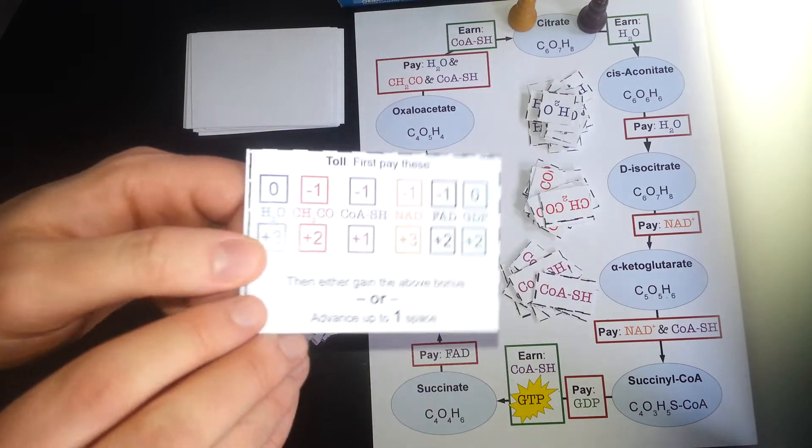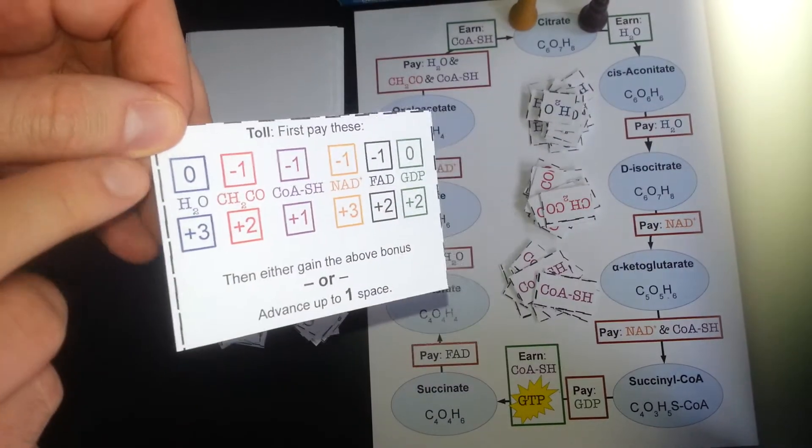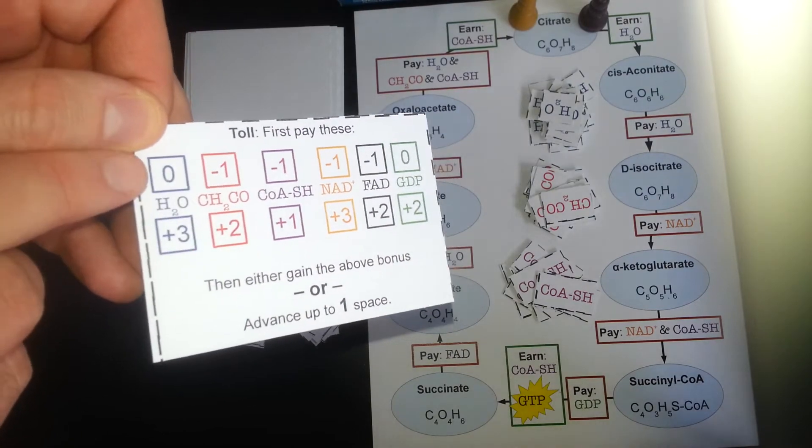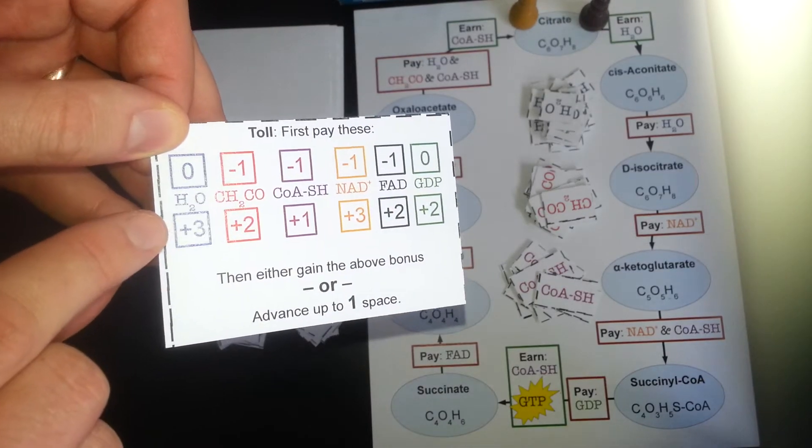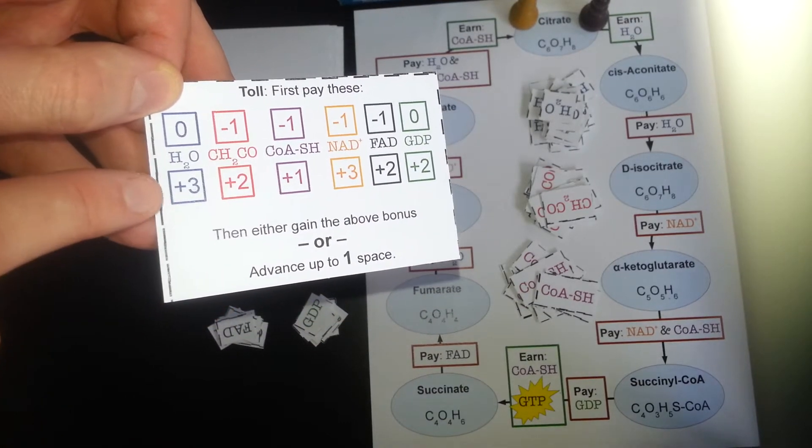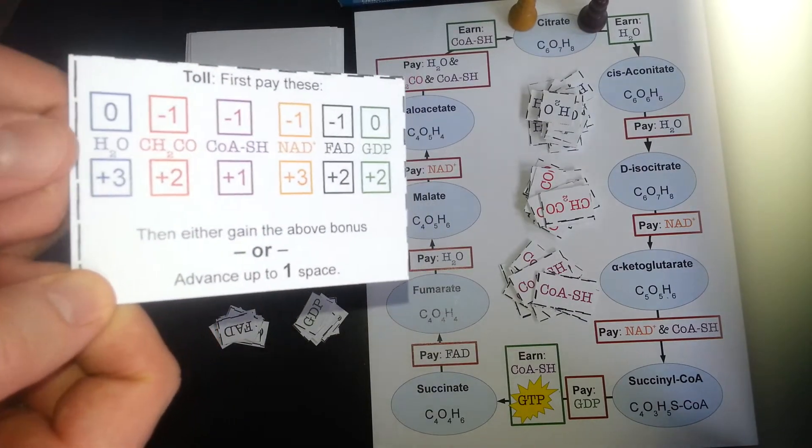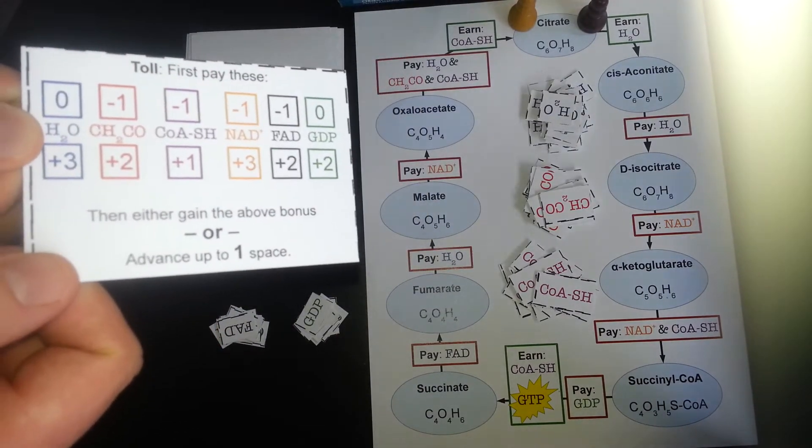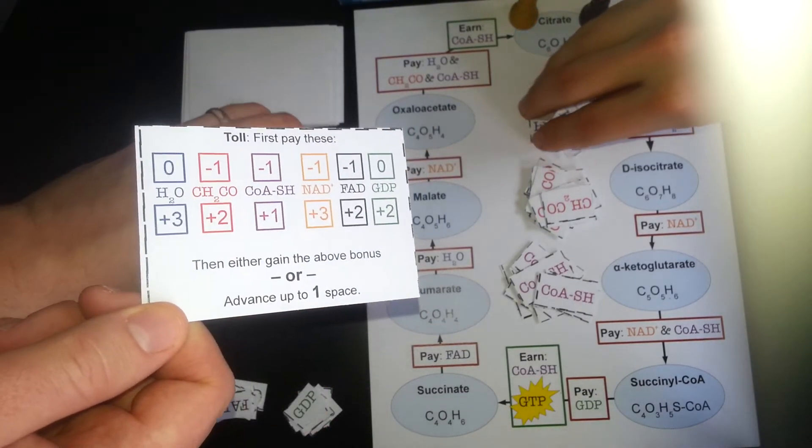Alright, so Ernie draws a card, and the first thing that he does is he pays this toll here, but we start out with no extra molecules, so he can't pay those, and we don't keep track of negatives, so that's fine. And the next thing he's going to do is he can either earn these molecules or he can advance up to one space. What would you like to do? I'm going to go with earning the molecules this time. Okay, so he is going to go ahead and earn the molecules.